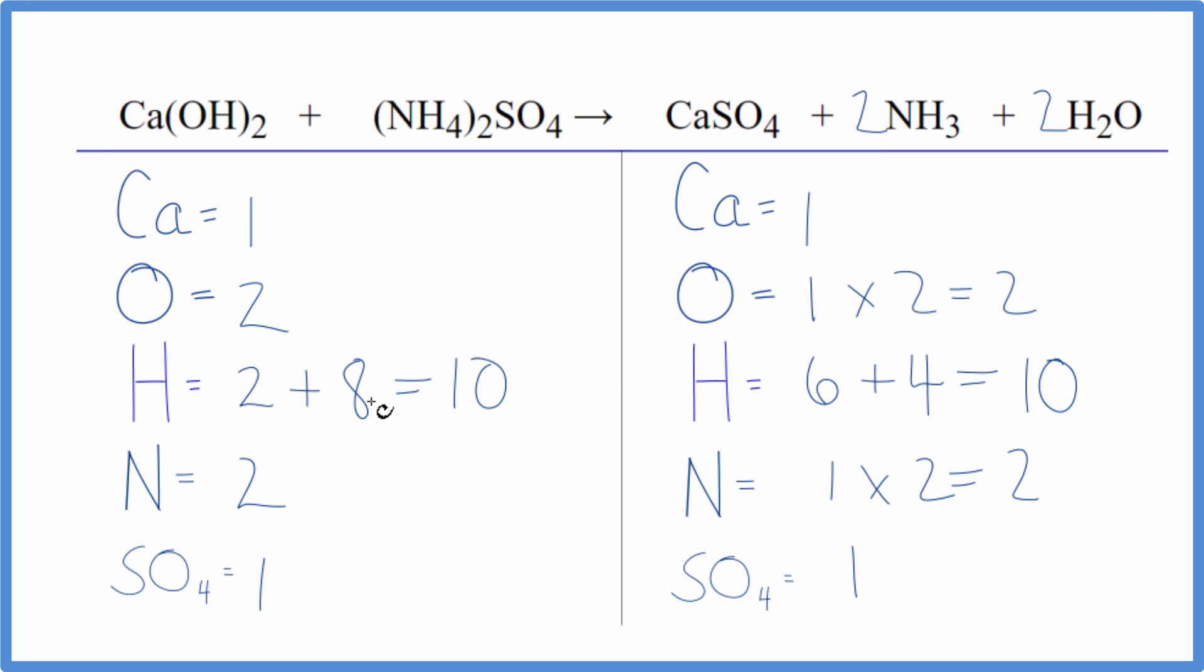The other thing, leave the oxygen till last, the hydrogen until later. That usually helps when balancing equations. This is Dr. B with the balanced equation for Ca(OH)2 plus (NH4)2SO4, calcium hydroxide plus ammonium sulfate. Thanks for watching.